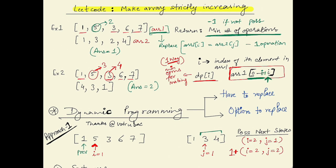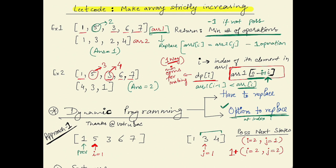If the previous element array1[i-1] is already less than array1[i], we have two options: either we pick some element from array2 and replace array1[i], or we keep array1[i] as it is since it's already larger than array1[i-1]. However, if array1[i] is less than or equal to array1[i-1], then we must replace it — we have only one option and must replace it with some element in array2.